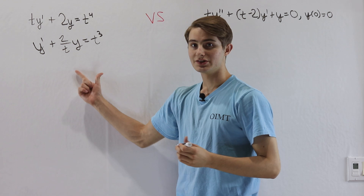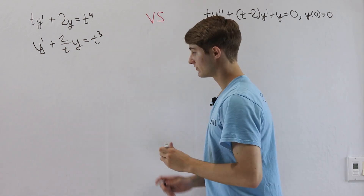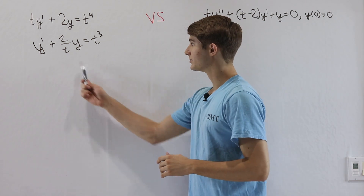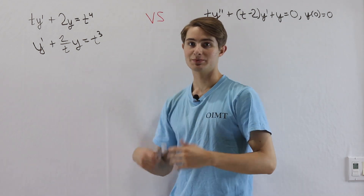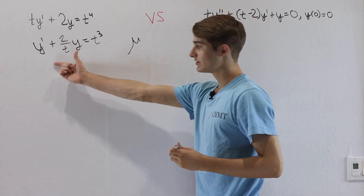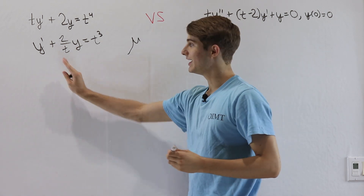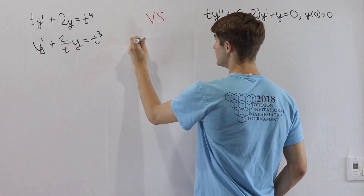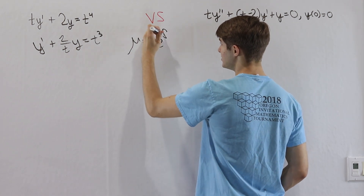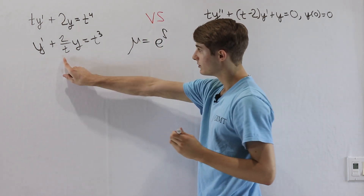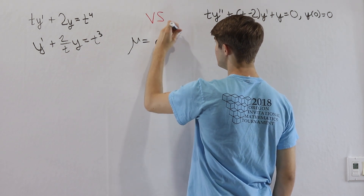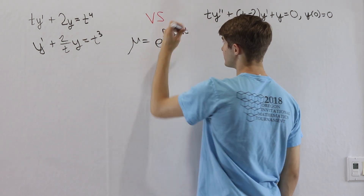We can see this is in the form of a first order linear differential equation, and we want to find an integrating factor to make this solvable. That integrating factor mu is going to be e to the integral of whatever is multiplied by y — so in this case, 2 over t with respect to t.